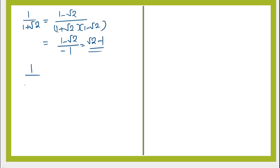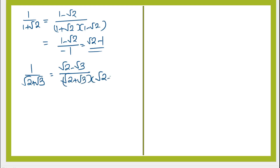The next term is 1 by root 2 plus root 3. Multiply the numerator and denominator by root 2 minus root 3. That is root 2 minus root 3 by root 2 plus root 3 times root 2 minus root 3, which equals root 2 minus root 3 by 2 minus 3, that is minus 1. So the expression becomes root 3 minus root 2.